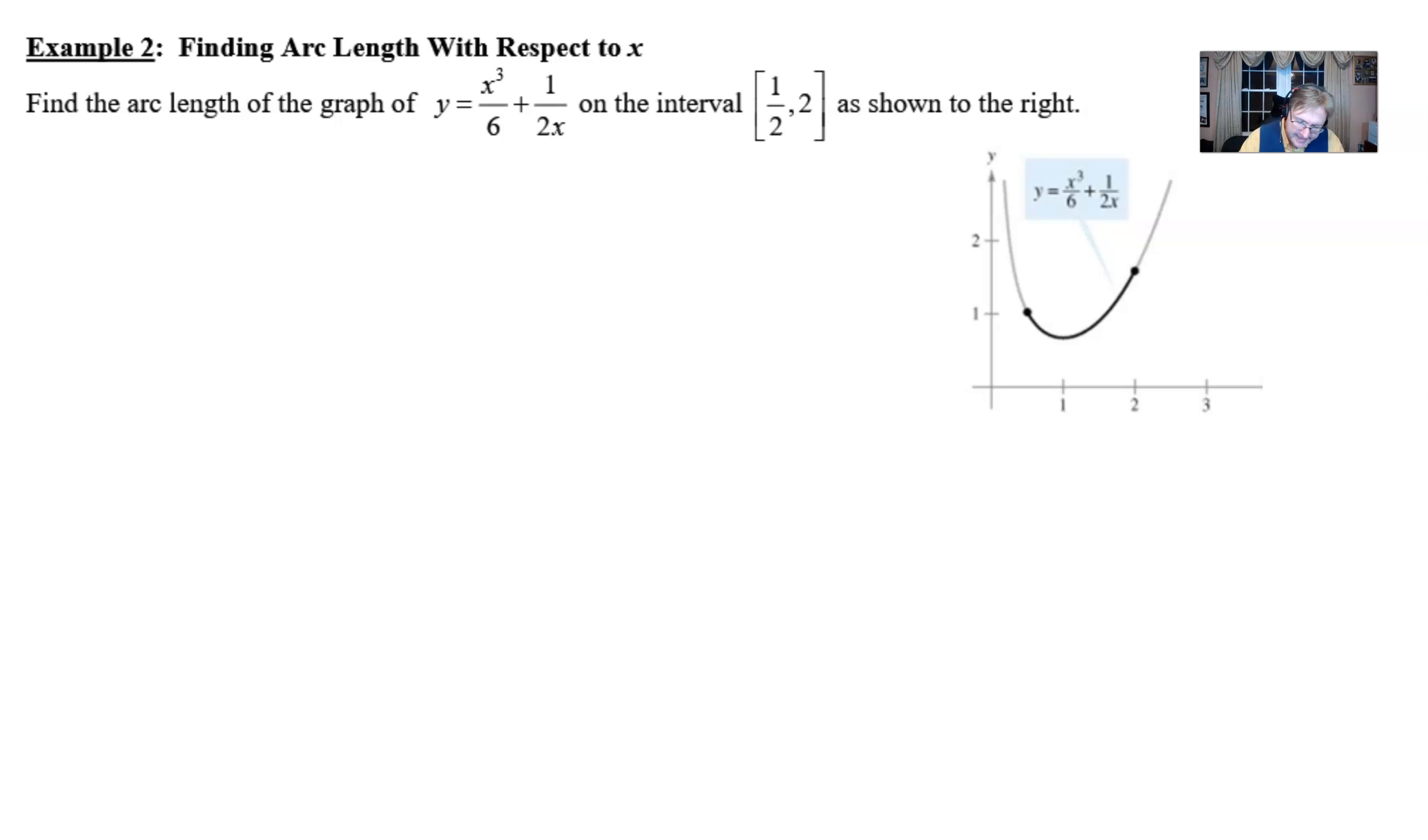Now over here to the side I want to write down what the formula is. We learned this from a previous video but arc length is found by integrating from a to b of the square root of one plus the derivative of your function all squared with respect to x of course. So that is our goal. Our goal is to assemble that expression, be able to integrate it, and have an answer. So let's go ahead and start.